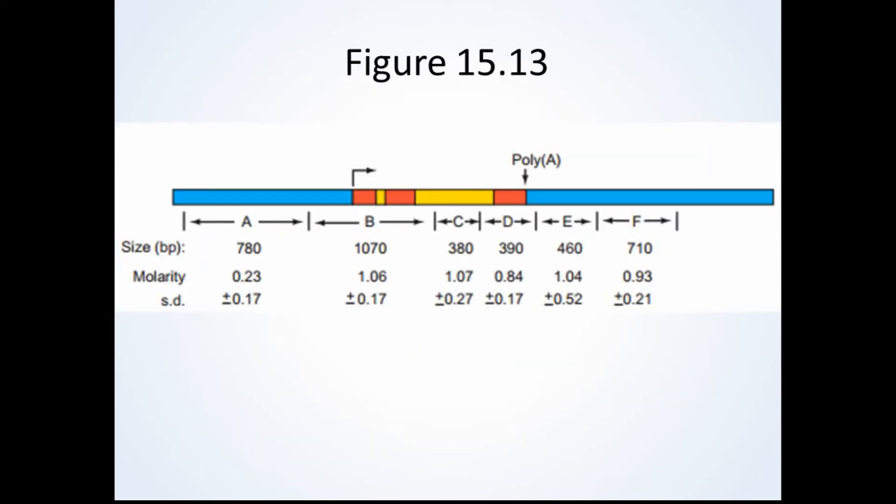Now that we understand all the important background information needed for these experiments, we can begin discussing figure 15.13. The purpose of this first experiment is to determine if transcription continues past the poly-A site. In order to do this, they first isolated nuclei from DMSO-stimulated erythroeleukemia cells. DMSO was used in order to induce high transcription of the globin genes. A nuclear run-on was then performed by incubating the isolated nuclei with radioactively labeled UTP in order to label the run-on RNA, which ended up being mostly globin pre-mRNA. This labeled RNA was then hybridized to DNA fragments A through F on a dot blot. These DNA probes were non-radioactive and single-stranded. They were immobilized on the filter paper in excess.